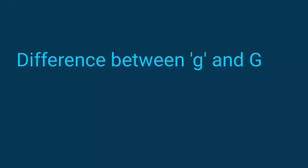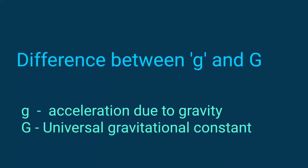Hello friends, welcome to my channel. In this video we discuss the difference between g and G. Here, small g stands for acceleration due to gravity and capital G stands for universal gravitational constant.